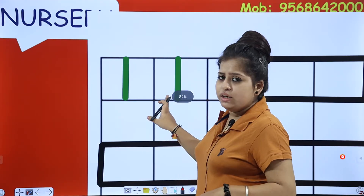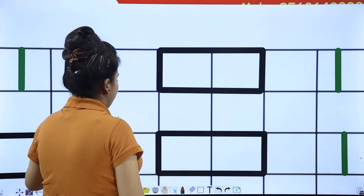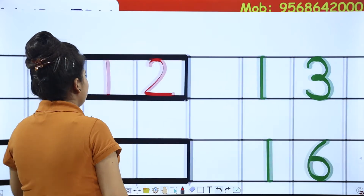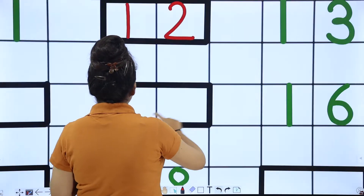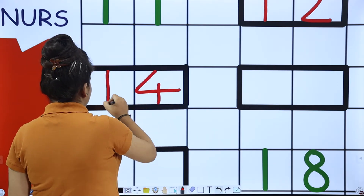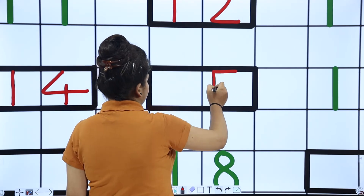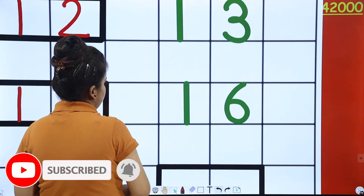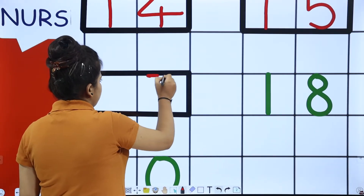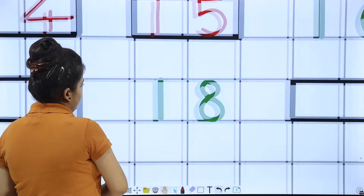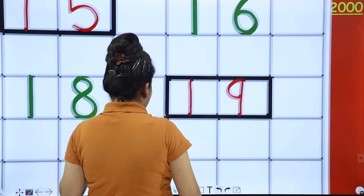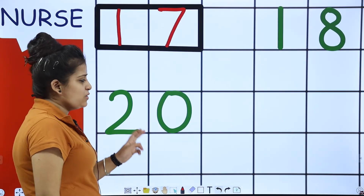First number is 11. To 11 ke baad kya aata hai? 12. Then comes 12. After that, there is a blank. Toh 13 ke baad kya aata hai? 14. Then 15. After that 16. And there is again a blank. Toh 16 ke baad, 6 ke baad 7 — so 17. And then 18. After that 19. And the number that comes here is 20. 20 is given.